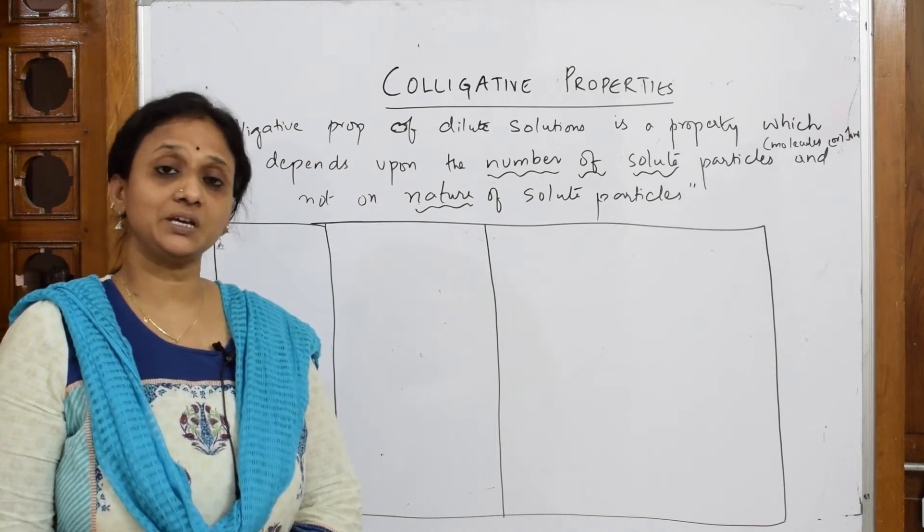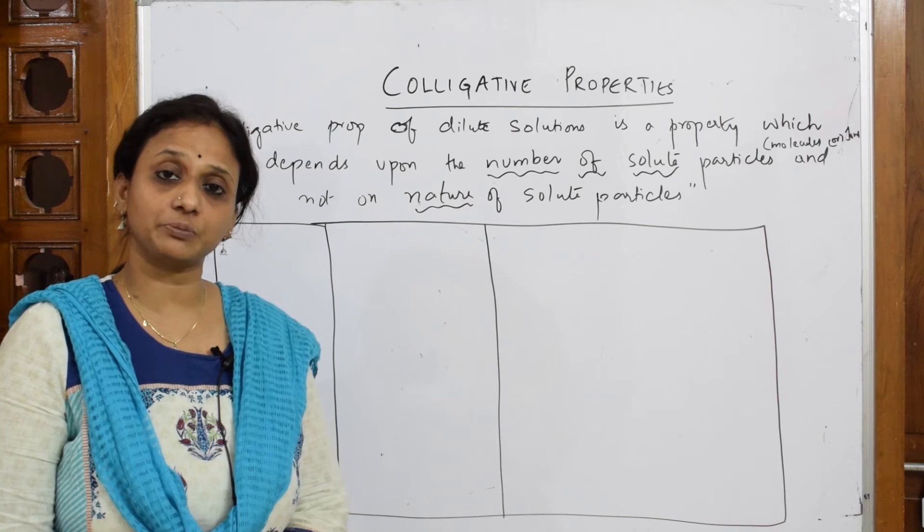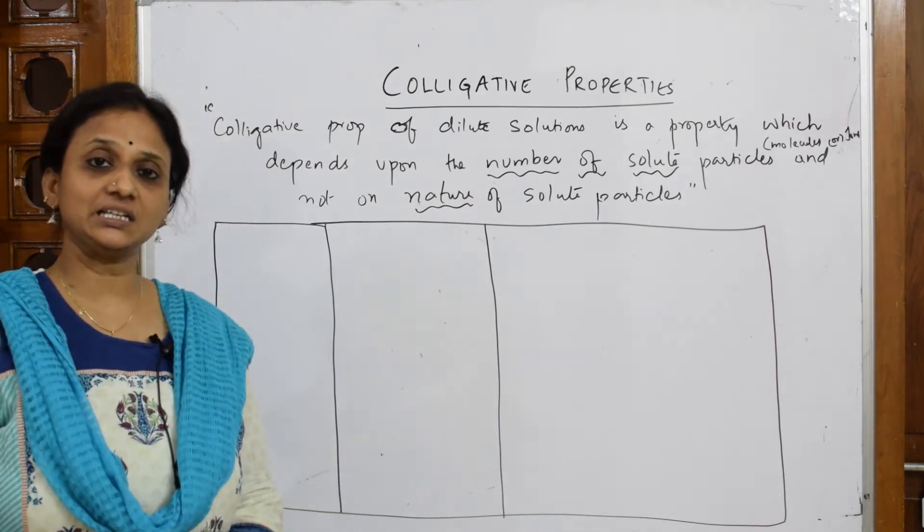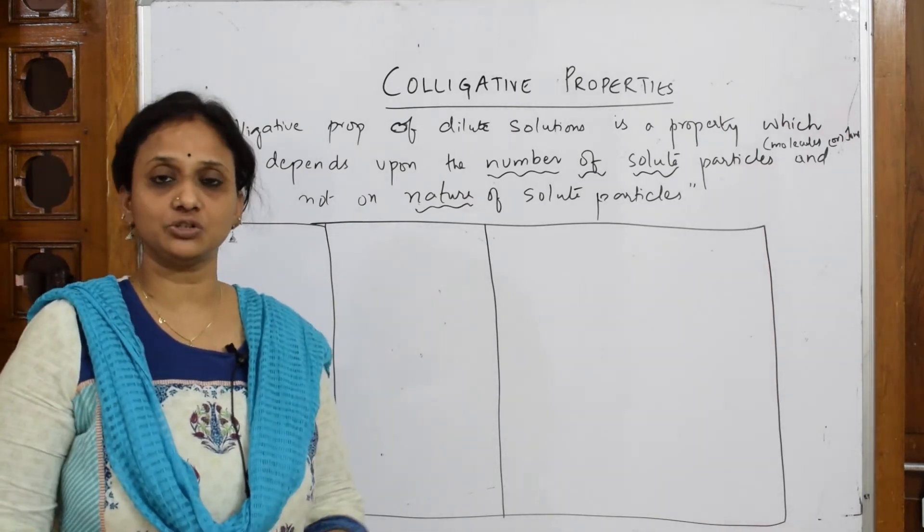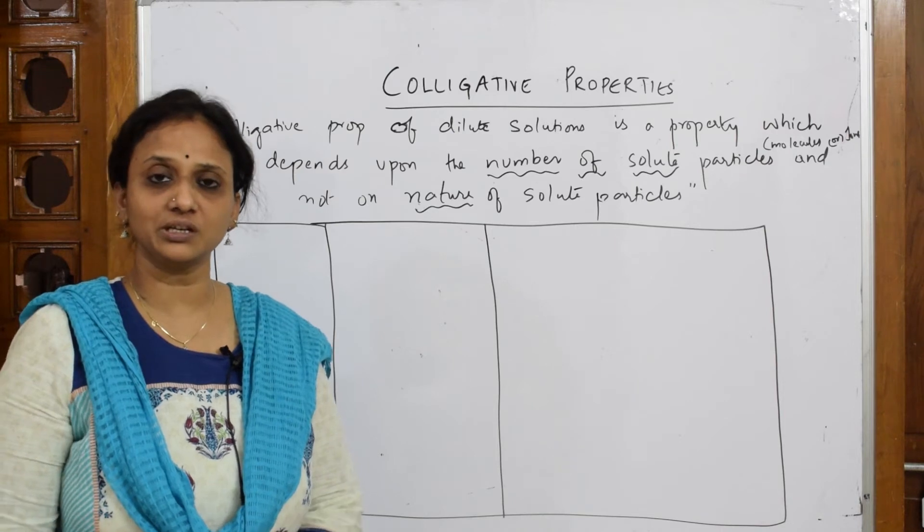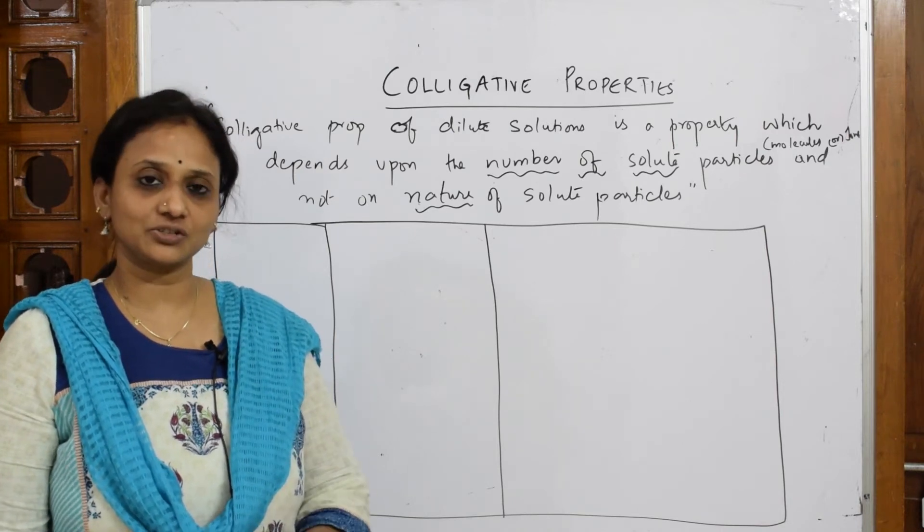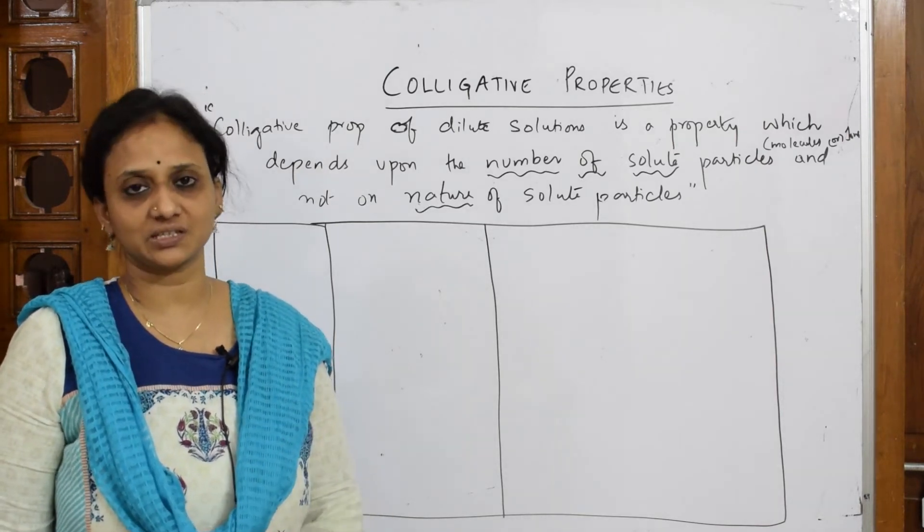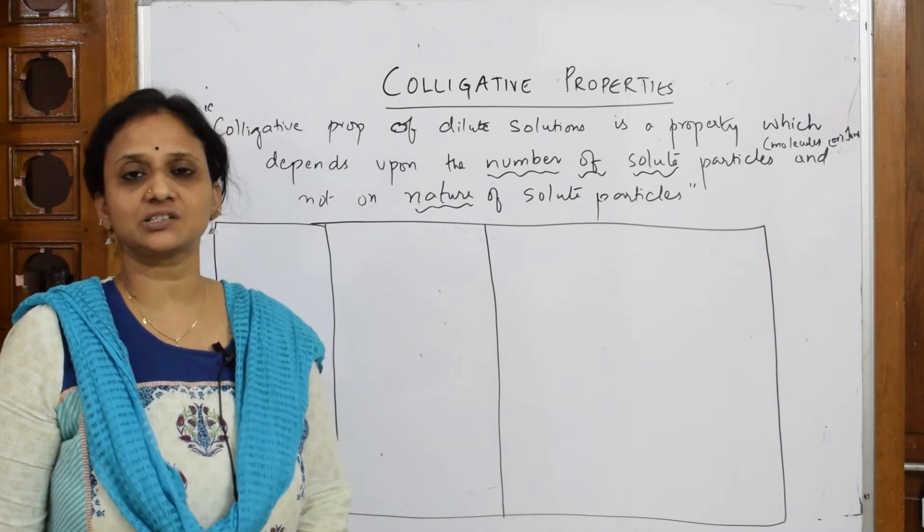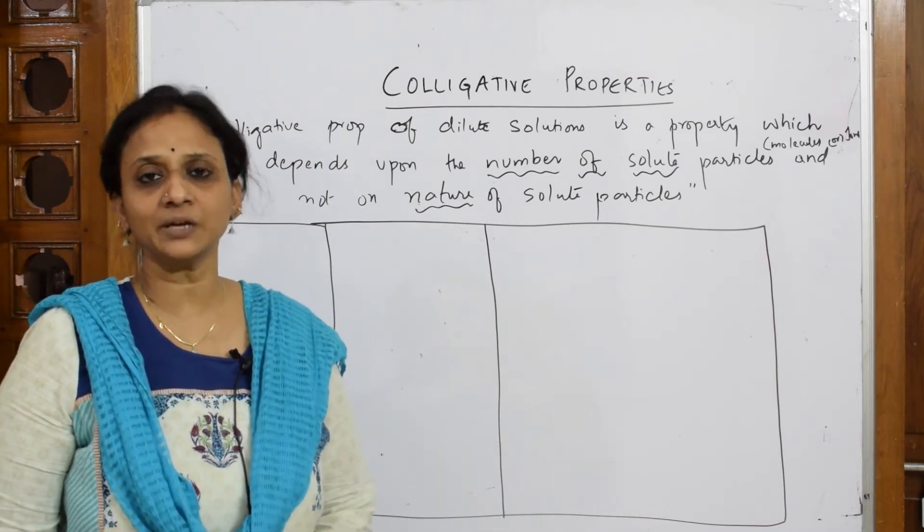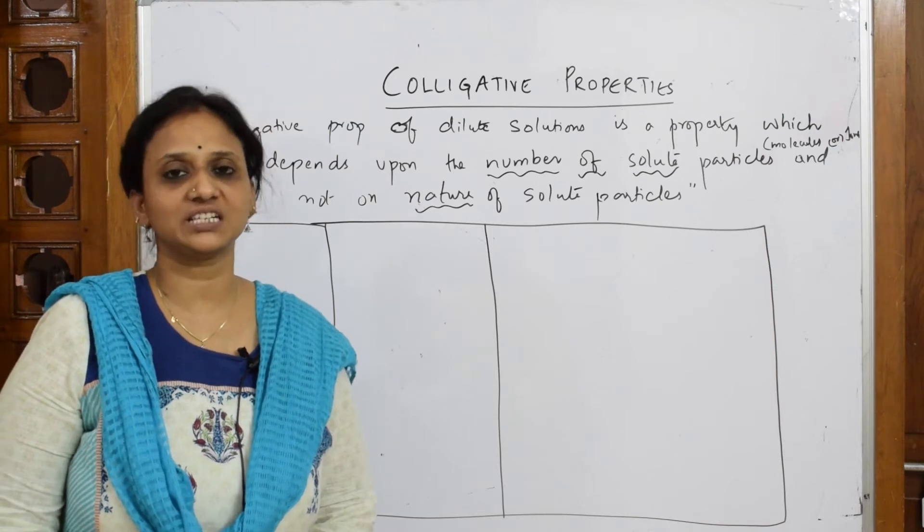So when I have to speak about the factors on which colligative property depends upon, I will be dealing with the mathematical expression, I will be teaching you how to draw the graph, doing the numericals based on that. I should tell you the main concept of the chapter is this. They will 100% ask you; out of 5 marks, 3 marks will come from this topic. So please try to concentrate and note it carefully.